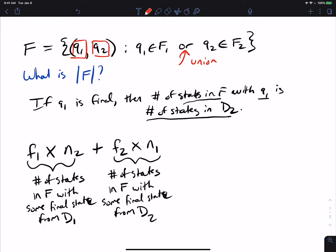But that means that they will appear in here, because F1 was, we're counting the states from the first machine's final states, and it'll appear in this calculation here. So what we're actually doing is, we're double counting the pairs right here, where both of the states are final. So we need to subtract the number of states that are final, that are final in both machines.